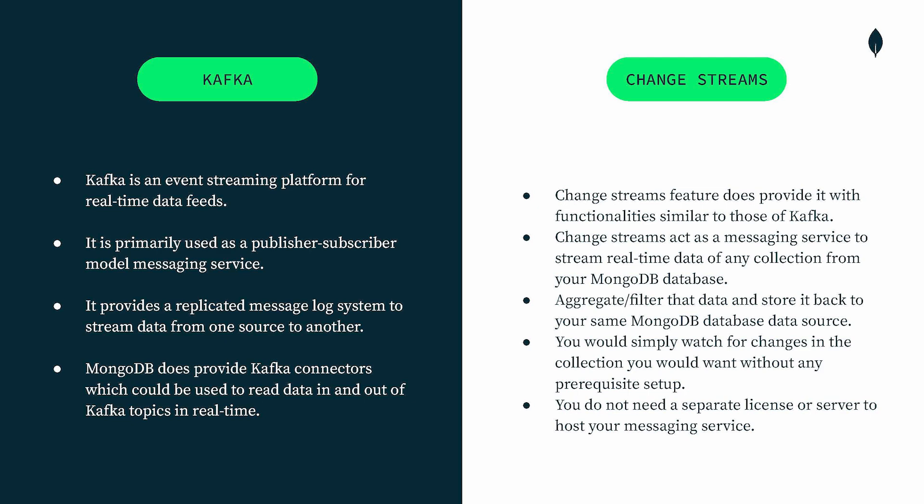Kafka is primarily used as a publisher-subscriber model messaging service to communicate between different kinds of resources, not within a single instance. In the case of MongoDB, Change Stream can act as such a source where you would not require a big setup or need to invest in an entirely new infrastructure. You can use Change Stream, which is the built-in mechanism by MongoDB, to do the same streaming of data from source to target without any extra overhead. MongoDB also provides Kafka connectors if you want to use Kafka, but the underlying principle for MongoDB Kafka connectors is actually Change Stream, where data is transmitted from what's being written to the op-log. For smaller setups, you can go for Change Stream as you would not need a separate license or server to host your messaging service.